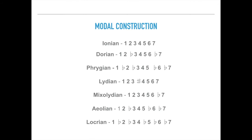Here is the modal construction. Ionian is 1, 2, 3, 4, 5, 6, 7 — nothing has been adjusted, so it's just a straight major scale. Dorian: 1, 2, flat 3, 4, 5, 6, flat 7 — so if you take any major scale and flatten the third and the seventh degree you will have a Dorian scale. Phrygian: 1, flat 2, flat 3, 4, 5, flat 6, flat 7.